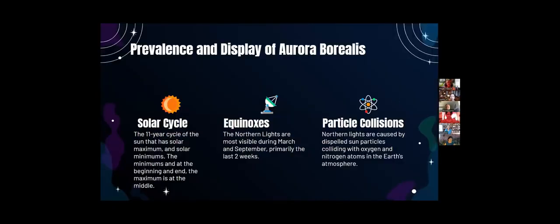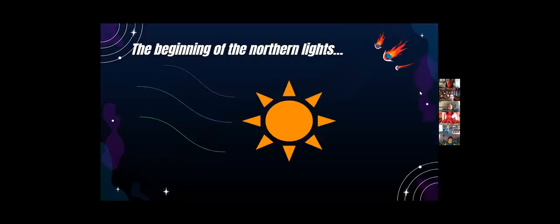Now, these are some things that I won't be talking about completely in this presentation, but I think are still notable. The solar cycle is an 11-year cycle of the sun that has a solar maximum and two solar minimums. The solar minimums are at the very ends, and the maximum is in the middle. The maximum is when the Northern Lights are the most visible, because that's when the most particles are discharged from the sun. The equinoxes are when the Northern Lights are most visible during March and September in the last two weeks, and we'll be talking about particle collisions quite a lot during this presentation, because that's what causes the Northern Lights overall.